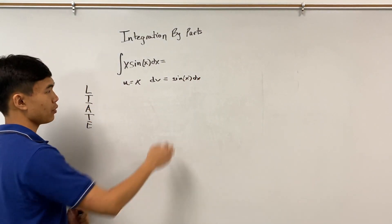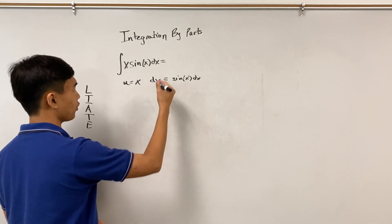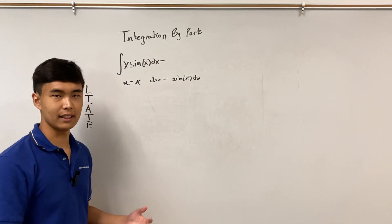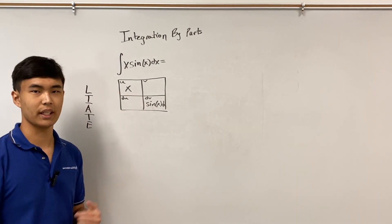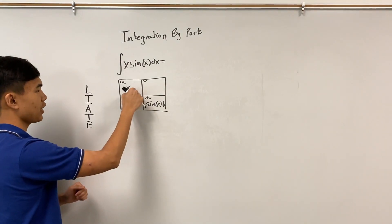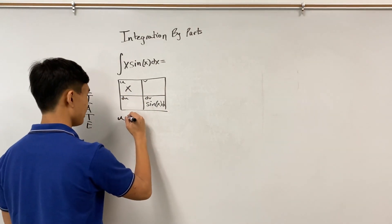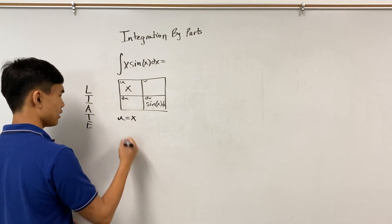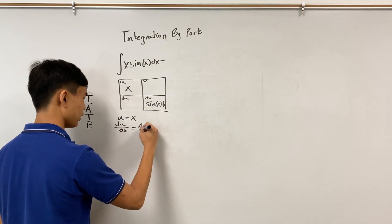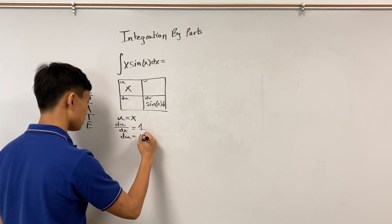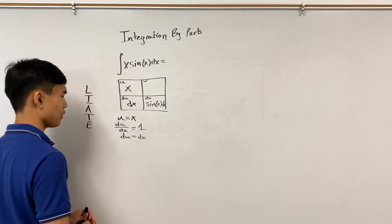It's important to bring the dx along with dv, because we can't integrate without a d-something. A good way to solve these problems is using a uv table to stay organized. Now differentiating u to get du: since u equals x, du/dx equals 1, so du equals dx.